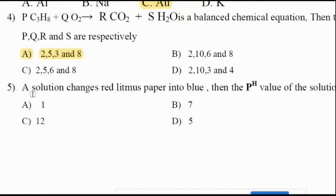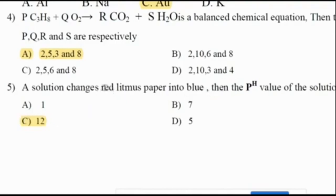Moving on to the fifth question: a solution changes red litmus paper into blue. The pH value of the solution is 12. It is a base — if the pH value is more than 7, it is obviously a base. Only a base can convert red litmus paper into blue.